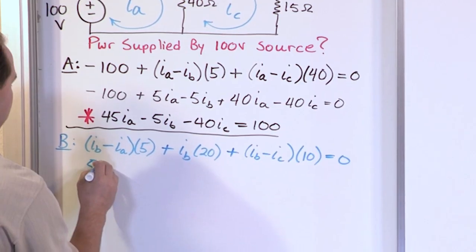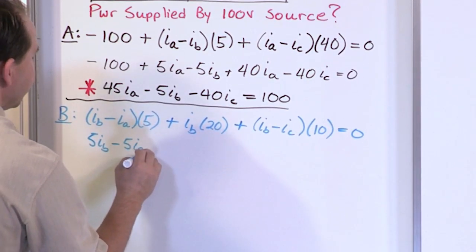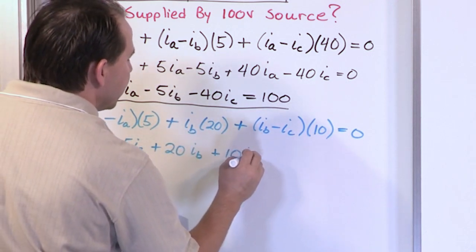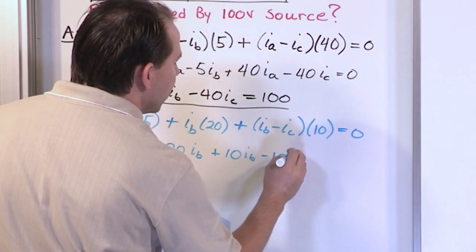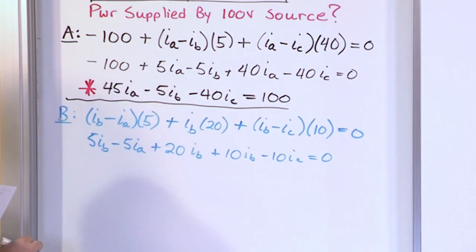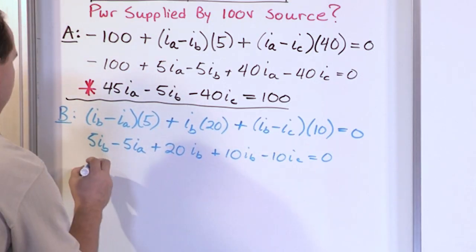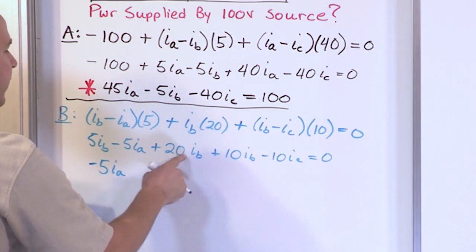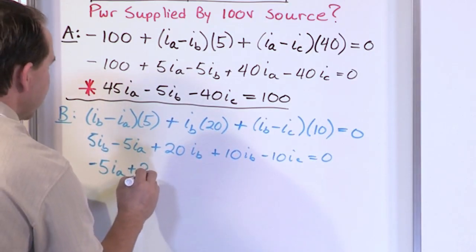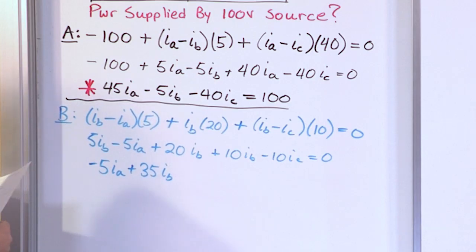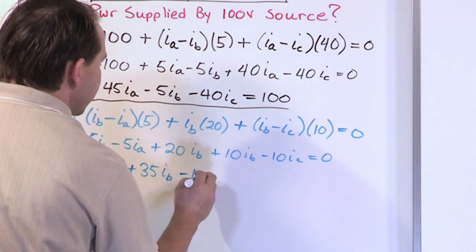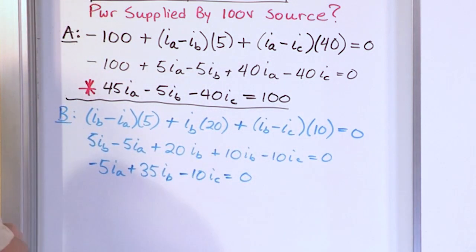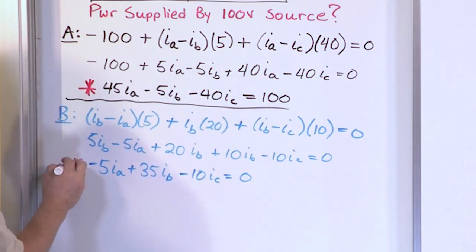Simplifying mesh B: 5(IB − IA) + 20·IB + 10(IB − IC) = 0. Distributing and collecting terms: −5·IA + 35·IB − 10·IC = 0. There are no constant terms, so the right-hand side is zero. That is the second mesh current equation.